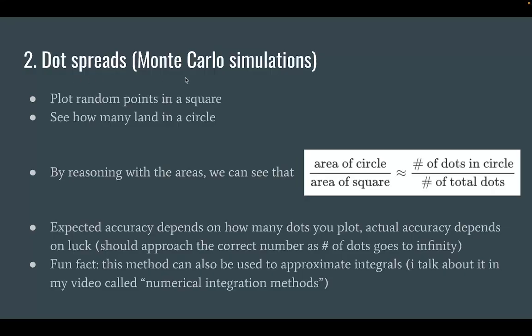The second method is called Monte Carlo simulations, or I like to call them dot spreads, because all you're really doing is plotting a bunch of dots in a square and then seeing how many of them land in a circle. And by reasoning with the areas, we can see that the area of the circle divided by the area of the square is around equal to the number of dots in the circle divided by the total number of dots. And we can actually say that these two ratios are equal as the number of dots that we plot goes to infinity.